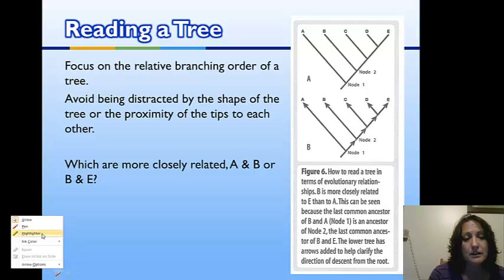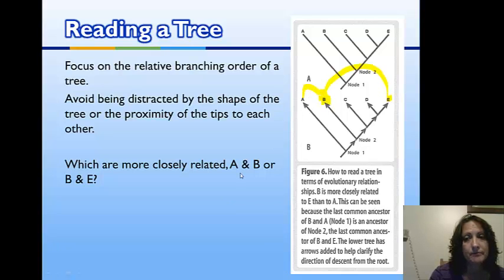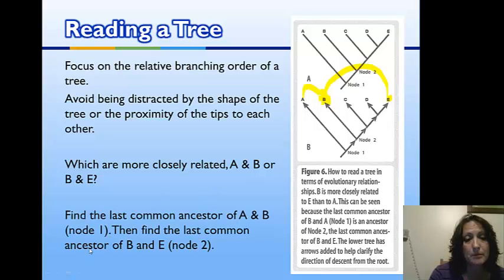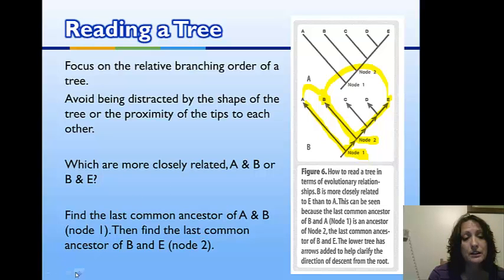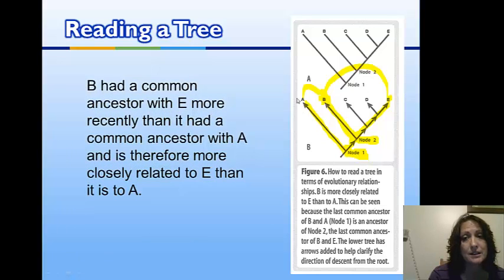Is B more closely related to A, or is B more closely related to E? To answer this, find the common ancestor between A and B — follow them down the tree until they converge. That convergence point is node one, which is back far in evolutionary time. Now follow B and E down — they come together at node two, which is more recent. Therefore, B and E are more closely related than A and B. Don't be confused by tips being close together; always look for the node where they last share a common ancestor.